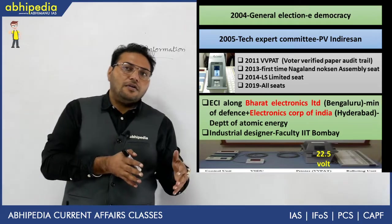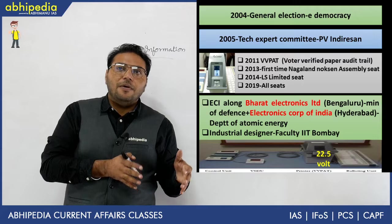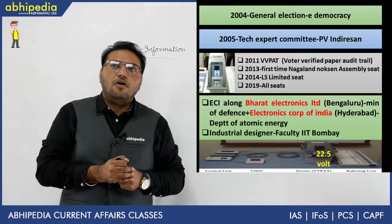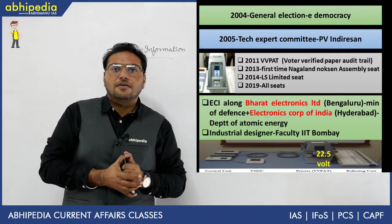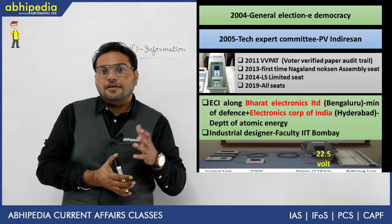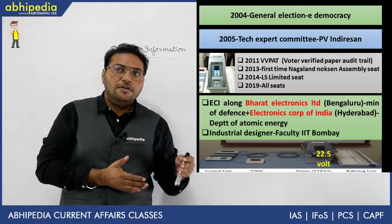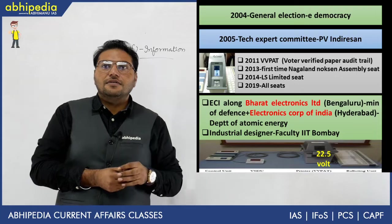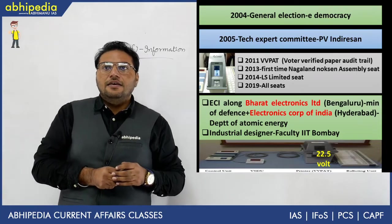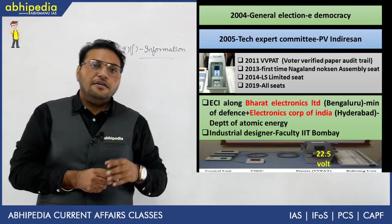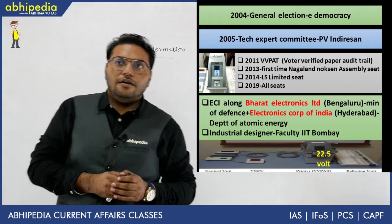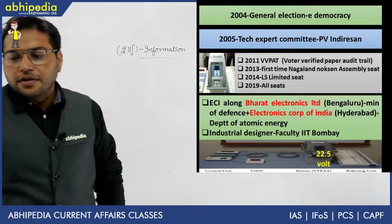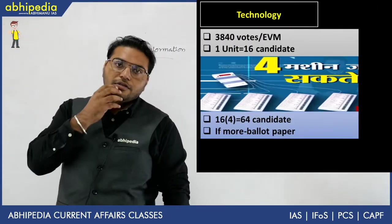EVMs are manufactured by two organizations: Bharat Electronics Limited (BEL), based in Bengaluru under the Ministry of Defence, and Electronics Corporation of India Limited (ECIL), which is under the Department of Atomic Energy — both work with the Election Commission of India.